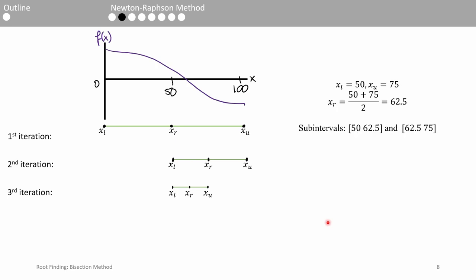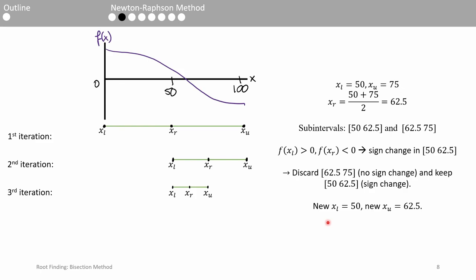Once again, we bisect the interval, evaluate the signs, and select a new subinterval for the fourth iteration. This process is repeated until we hone in on the root. Every iteration, we split the last interval in half and proceed with the interval which contains the sign change.